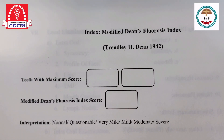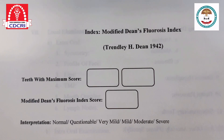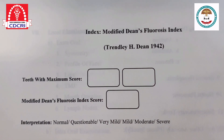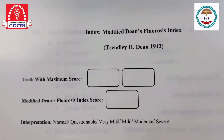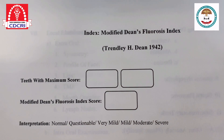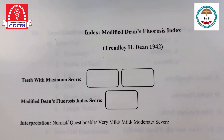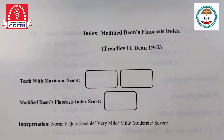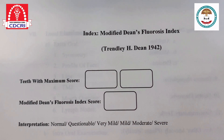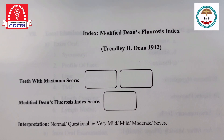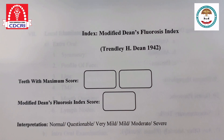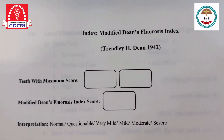Procedure for Dean's Fluorosis Index: To obtain the Dean's Fluorosis Index score, the examiner's recording is based on the two teeth most affected. However, if the two teeth are not equally affected, the score for the less affected tooth is recorded. The examiner should start at the higher end of the index, that is severe, and eliminate each score or category until he or she arrives at the present condition. If there is any doubt, the lower score should be recorded.